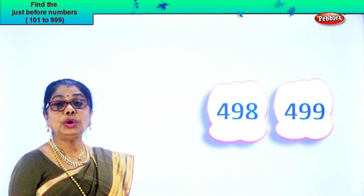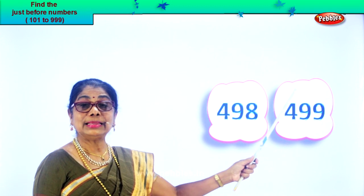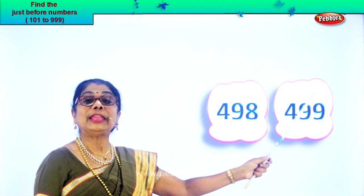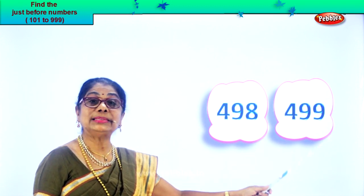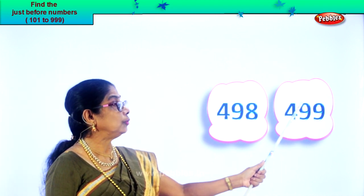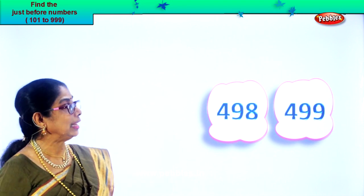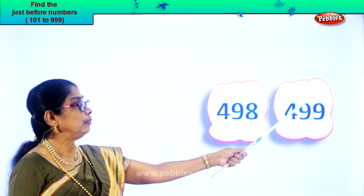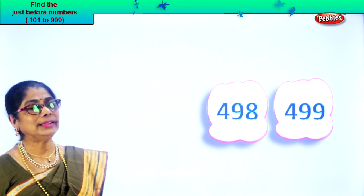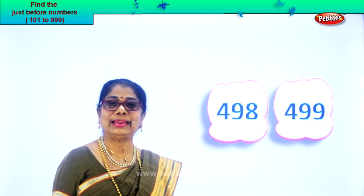All you have to do is look at the tens and ones place. If the ones place is not sufficient, you go to the two places. Here we only have to look at the ones place. One less than nine is eight. So 498, 499.